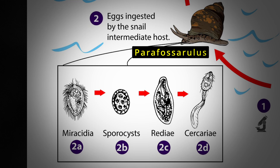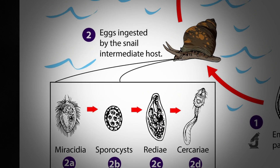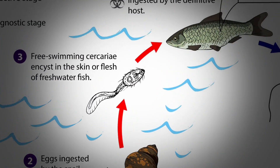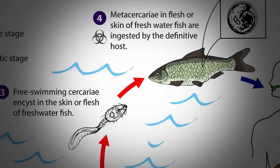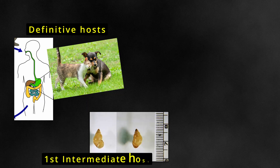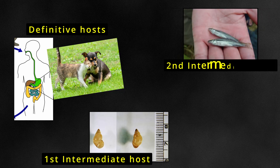Inside the snails, they undergo several developmental changes until they become cercariae. From the snail, the cercariae are released into the water and swim until they find their second intermediate host, the freshwater fish, where they encyst as metacercariae within the muscles or under the scales, and then the life cycle resets. Humans and other carnivores, such as dogs and cats, are the definitive hosts. Snails serve as the first intermediate host, while freshwater fish of the family Cyprinidae are the second intermediate host.